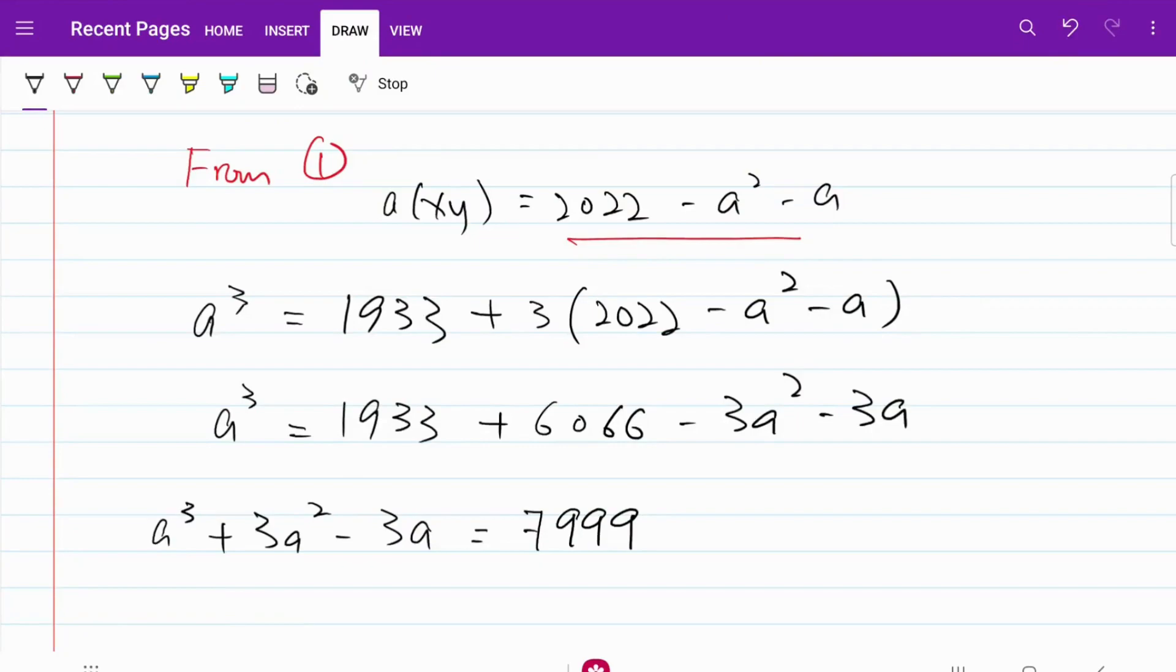I apologize for the earlier mistake. It should be plus 3a and not minus 3a. So what I now have is this cubic equation of a cubed plus 3a squared plus 3a is equal to 7999.